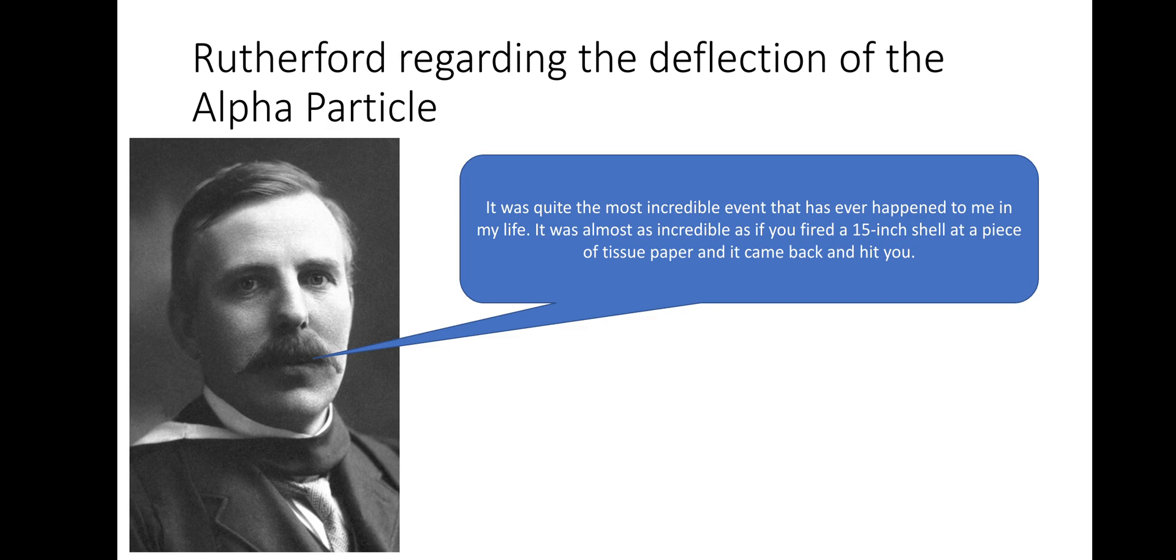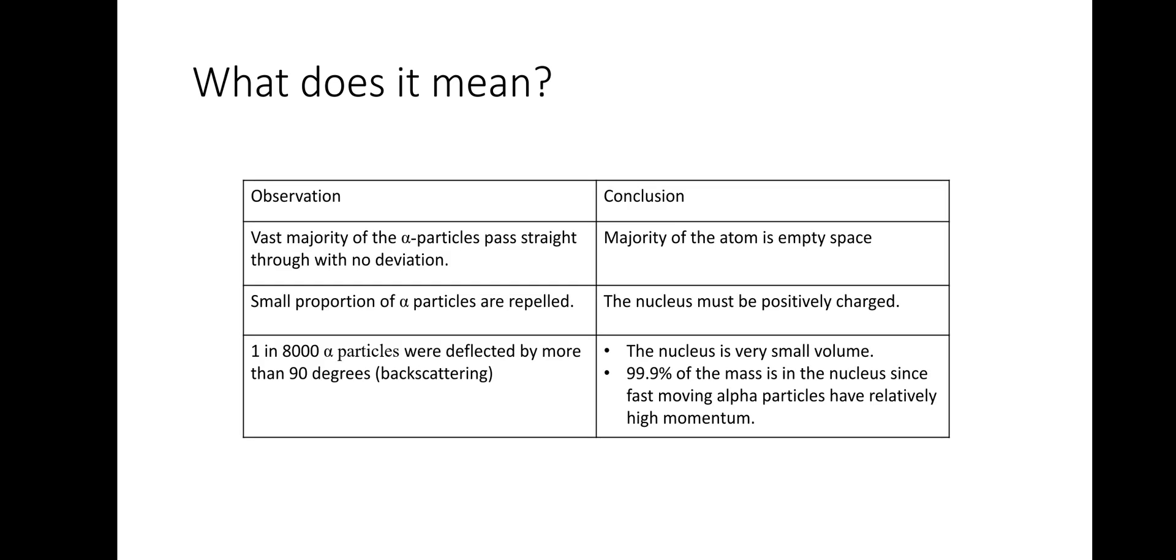And it also clearly disproved the plum pudding model regarding the atom. So what needed to happen was the theory needed to change to adapt the evidence that was presented due to the experimentation. So, what does it mean? So on this slide, some important information. So the observation on the left-hand side. The vast majority of the alpha particles pass straight through with absolutely no deviation or some with some slight deviation. So the conclusion is that the majority of the atom is empty space. And it's been long established that 99.9% of an atom is empty space.